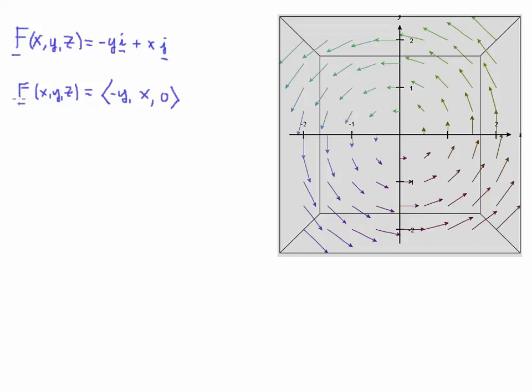If I write this as F(x,y,z), you can certainly see that the z component is going to be zero. There is a +0k up here, but we typically don't write that. So just to make that clear, I put it here.